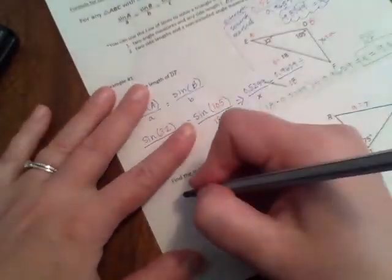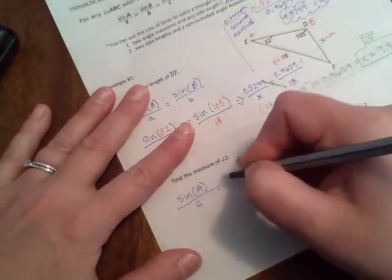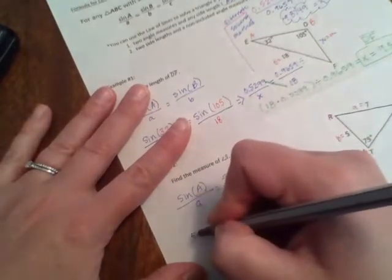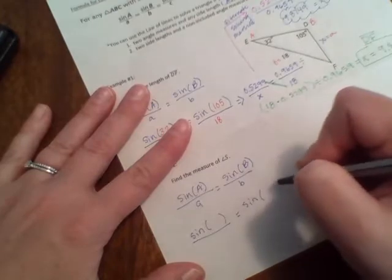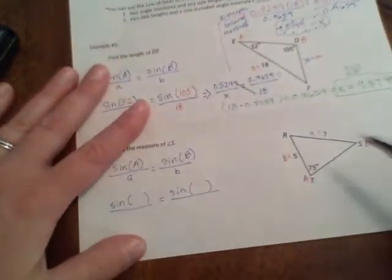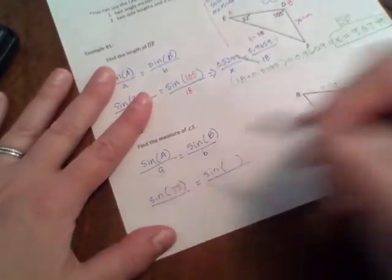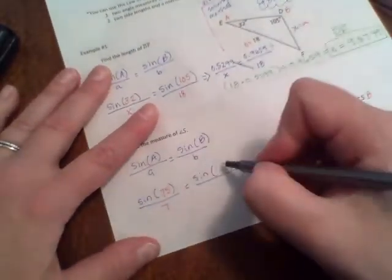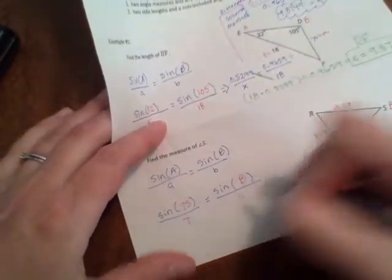All right. So that means that I'm going to do sine of A over side length a and sine of B over side length b. So we'll go ahead and fill in each of those pieces. And that means that A is actually 75 degrees. a, the side length, is 7. B, the angle measure, we don't know what it is. And b, the side length, we know that that is 5, which of course looks like an S.